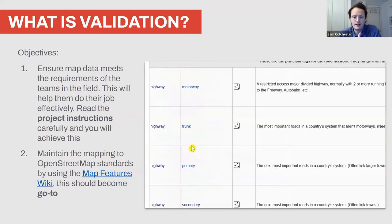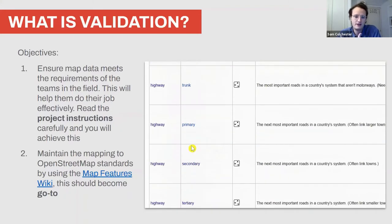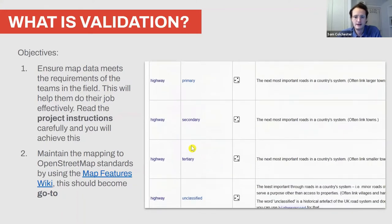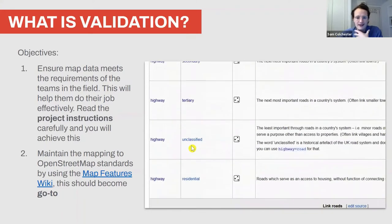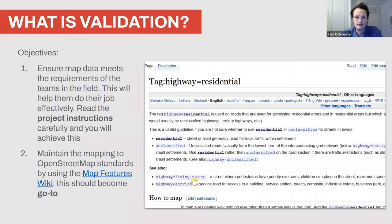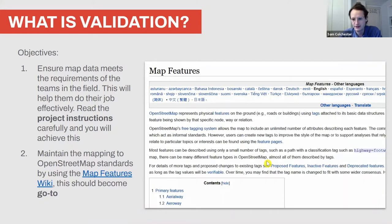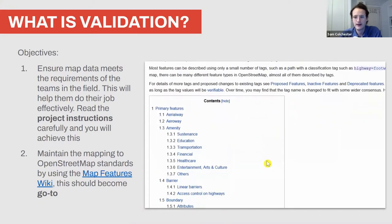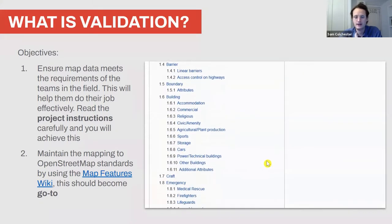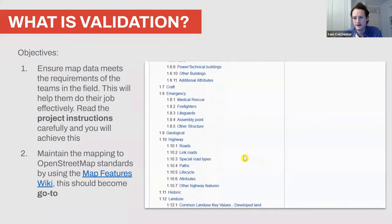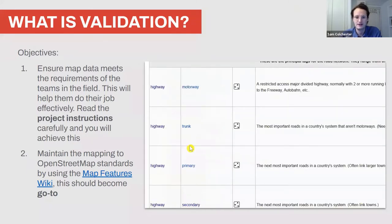Effectively, validation is where remote volunteers double-check the data — they look to ensure that everything has been mapped properly, nothing is missing, things are tagged or identified correctly, and features like buildings, roads, and waterways are in the correct positions.